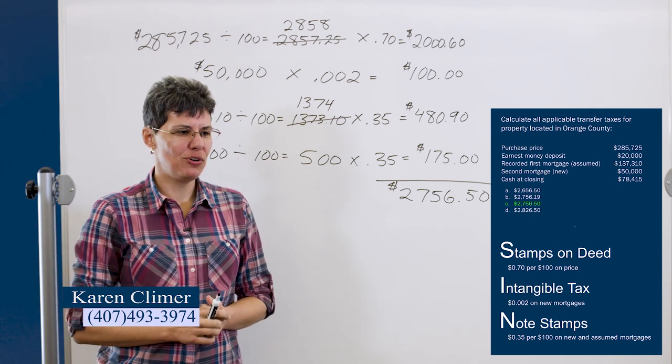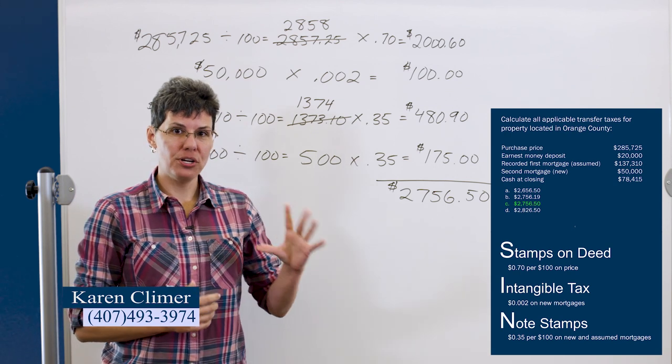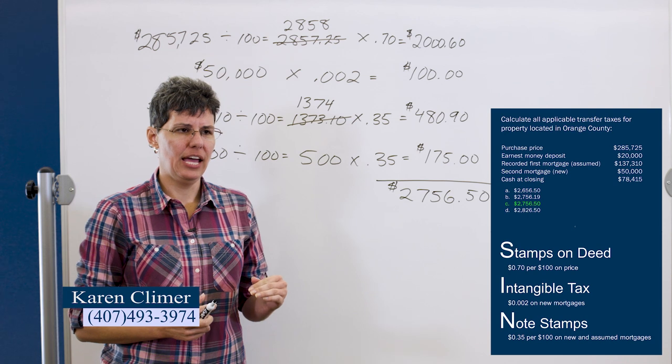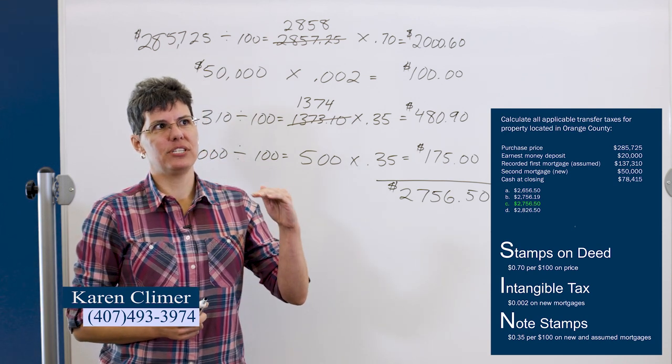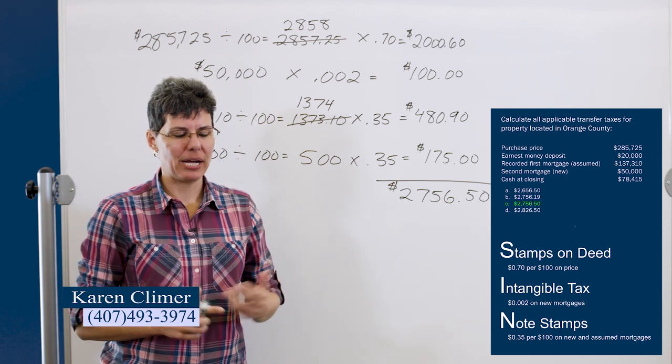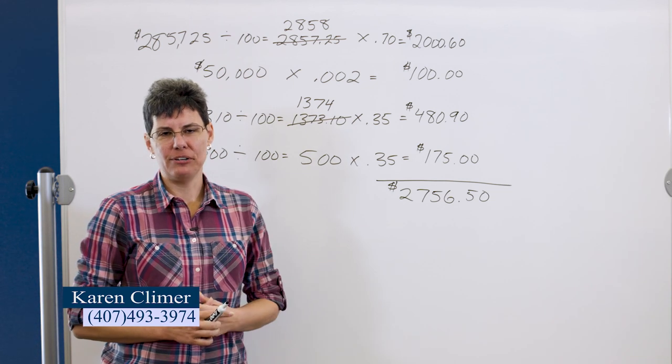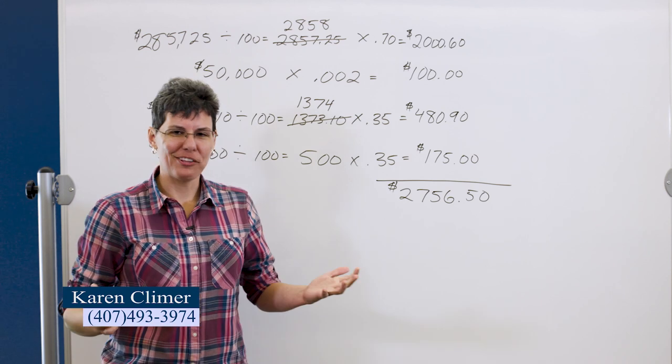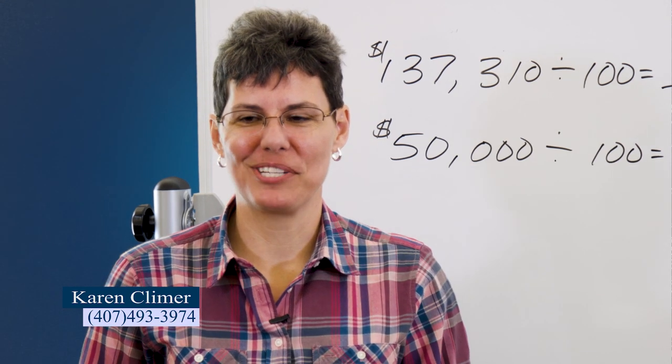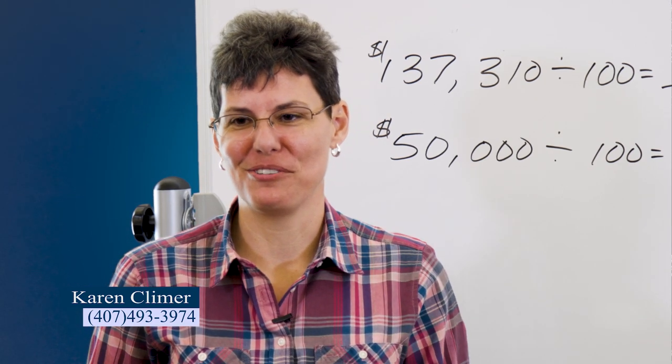And I just want to tell you a few memory tips that might help memorizing the amounts. You do need to know the amounts for the state exam. They're not given to you. So you've got taxes are a sin, S-I-N. S for the stamps on the deed is 70 cents. So those both start with S. That might help a little bit. And then the note stamps are 35 cents, which is half of the 70 cents. But other than that, you just have to memorize it. Now I have a second problem that's related to transfer tax that I'm going to show you. That's also the type of thing you might see on the state exam. So stick around and I'll show you a second problem.